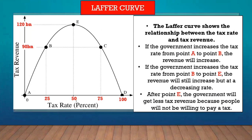The last thing we're going to look at is the Laffer curve. The rationale behind the Laffer curve is that people will only be willing to pay tax up to a certain point. On this graph, that point is E. The graph is increasing, indicating that tax revenue is increasing up until point E. After point E, it starts decreasing, meaning the government gets less and less tax revenue. At point A, the tax rate is zero and the tax revenue is also zero.